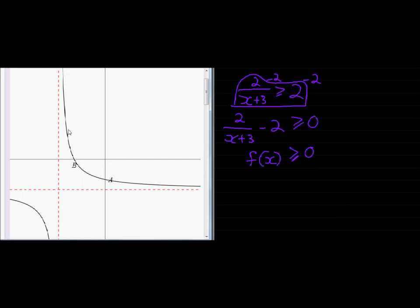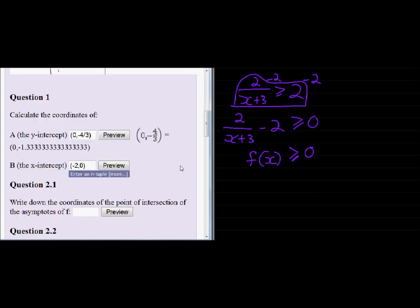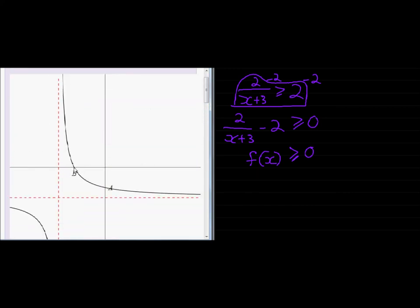Now, what will the x values be? The x values will be all the values between this red line and b. We've already calculated what b is—b is the x-intercept, which we calculated to be negative 2.